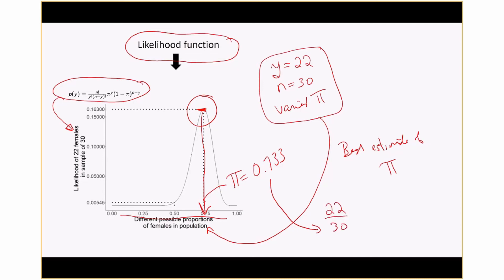In this particular case, when you get 22 females in a sample size of 30, just off the top of your head, you're going to come up with 22 over 30 as being the best estimate.